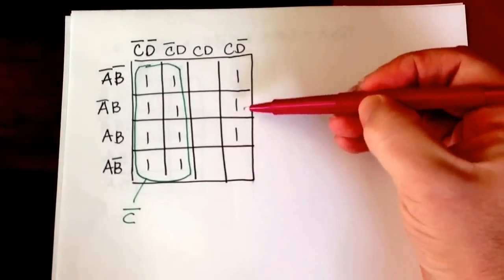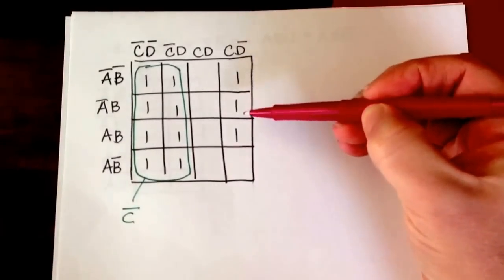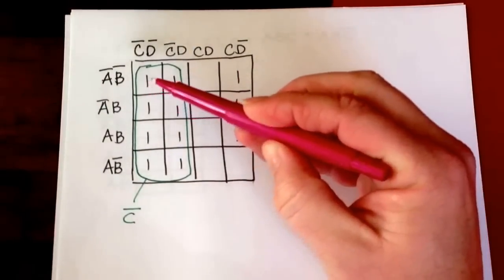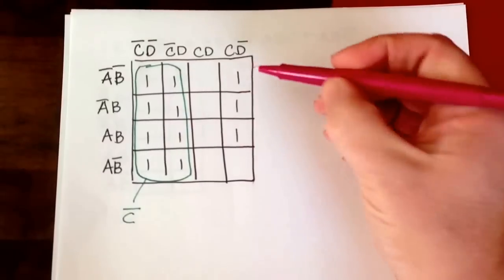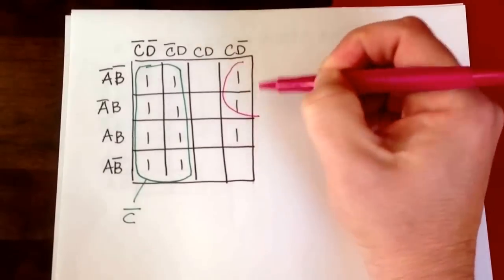Well, I have some ones here—I have three, I can't make a group of three. I have two here, but there are also two there, so I can wrap around to make a group of four.